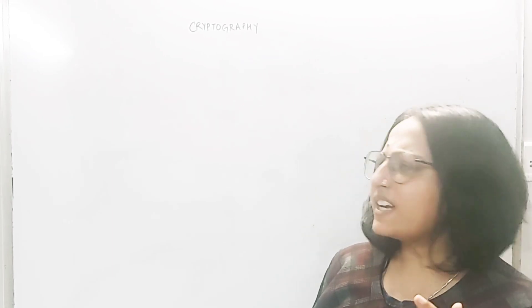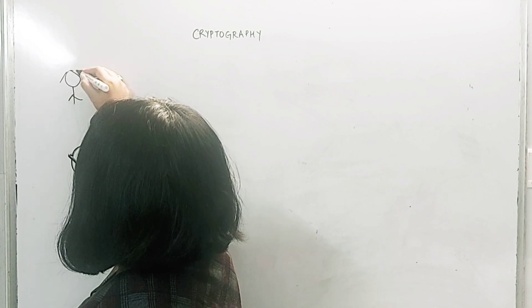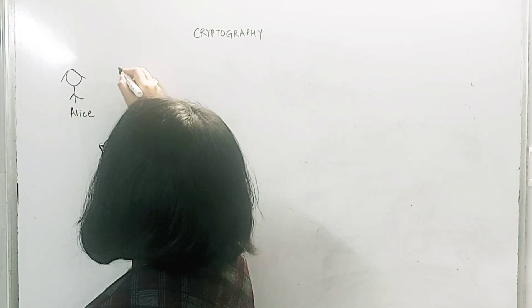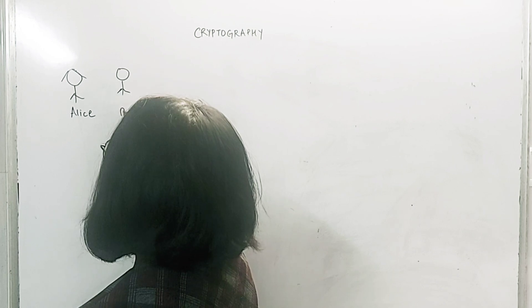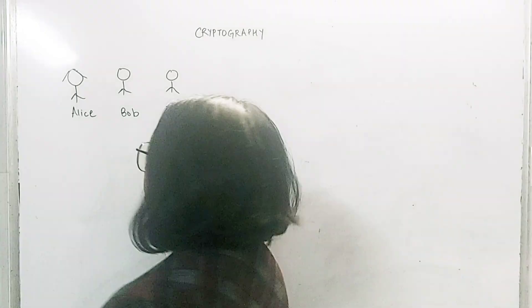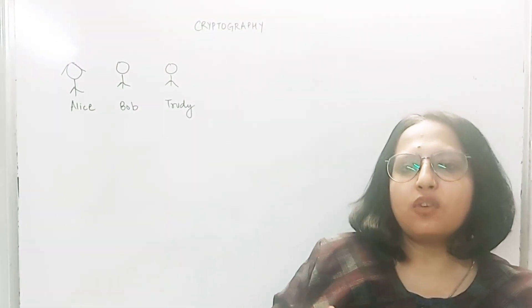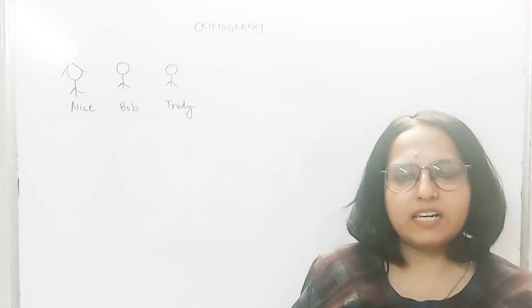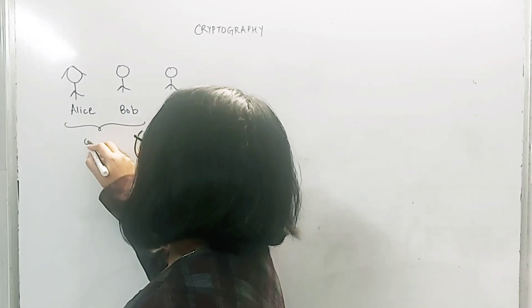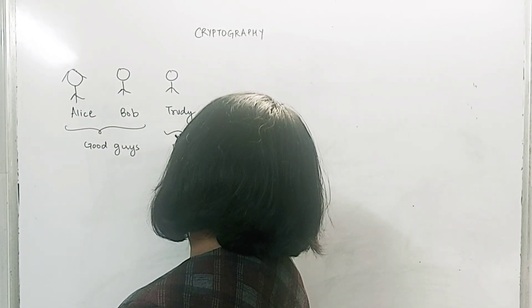Just like any other story, cryptography also has its set of characters. Our first character is Alice, the second character is Bob, and the third character is Trudy. Every story has its set of good guys and bad guys — in this story, the good guys are Alice and Bob, and the bad guy is Trudy.